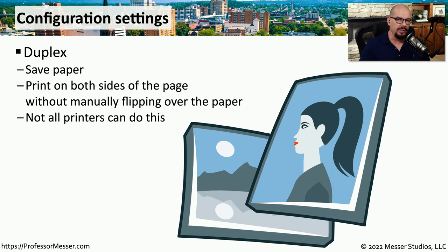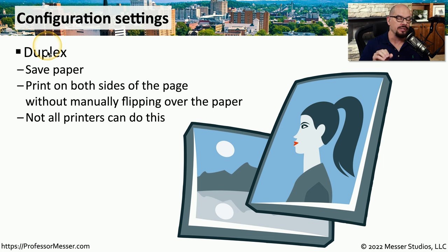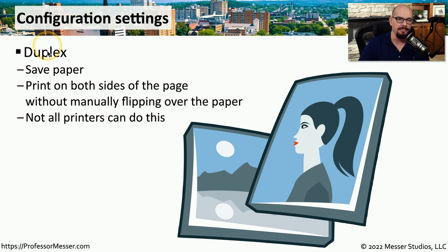When you send your print job to the printer, there are a number of different options available. One of these is the duplex option, which allows you to print on both sides of the page in order to save paper. Not all printers have a duplex option, but if it's available, you'll probably see it listed on the print dialog.